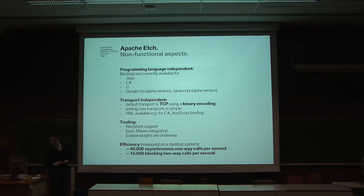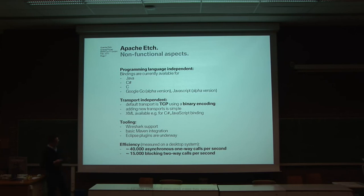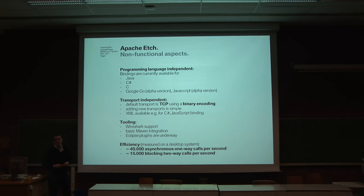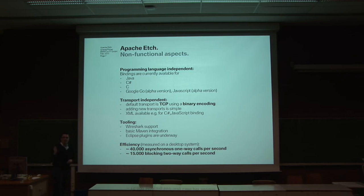Now, efficiency — it's quite important. I don't have time in these 15 minutes to do a full comparison with all other frameworks, but there's data on the website. To give you an impression: with asynchronous one-way fire-and-forget calls, we reach around 40,000 function calls per second on a normal desktop system. Comparing that to an HTTP-based, XML-based web service framework, you'll end up a factor of 10 to 100 slower. Even with blocking calls, we reach 15,000 calls per second. This is really meant for performance-critical embedded applications and higher-scale networks.